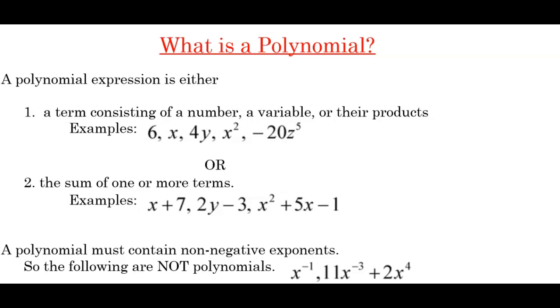So looking at our examples, let's start with the 6. Any number is a polynomial, so 6, 25, -2, all would be examples of polynomials. Even the number 0, that one always throws students, 0 is technically a polynomial as well.